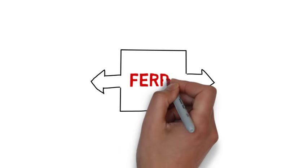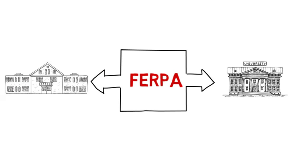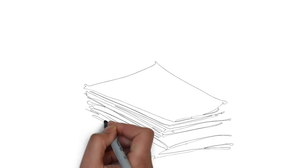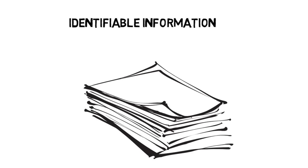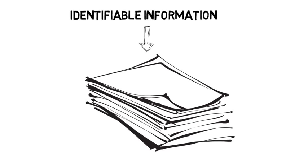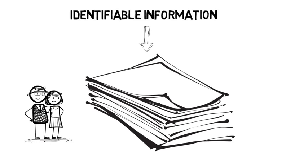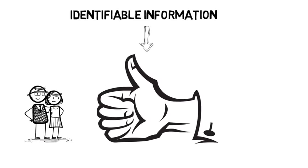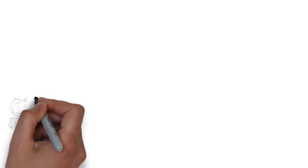FERPA is a federal law that applies to most schools, colleges, and universities. It's meant to protect all that identifiable information about students in records that are kept by schools, and it provides the right for you to access that information, to seek to correct it, and generally to consent to its disclosure. Let's take a closer look at what that means.